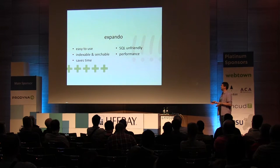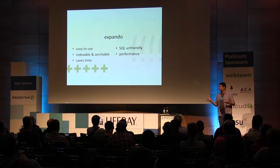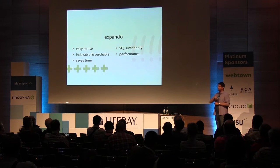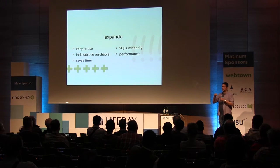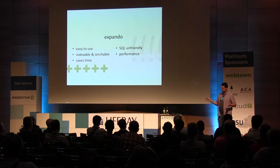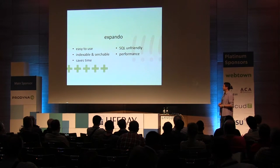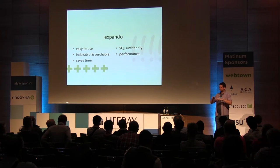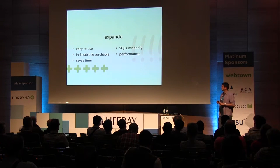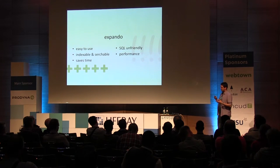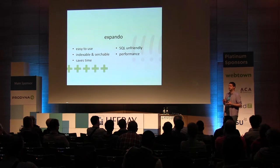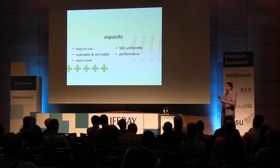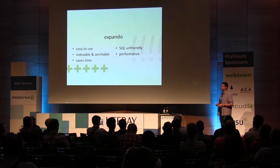Expando, or the custom attributes framework — again, very easy to use. It works so you can index and search custom attributes for almost any entity, and it saves lots of time. I've been there when Liferay didn't have Expando and it saves a lot. You don't have to hack into the portal, create custom database tables, or wire things together. However, watch out if you create too many attributes and build logic on top of them — you can have performance problems. Also, if you need to do really complex SQL queries, Expando will not help — for example, doing sums based on those attributes is very hard and almost impossible.